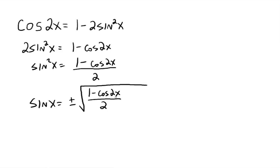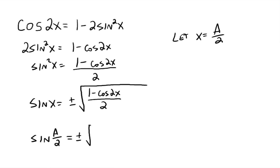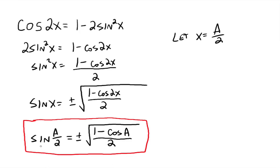Now we're going to replace x here. Let x equal some angle divided by 2 — we're going to plug in a over 2. When we do that, we have the sine of a over 2 equals plus or minus the square root of 1 minus the cosine of 2 times a over 2, which is just the cosine of a, all over 2. This is called a half-angle identity because we're taking the sine of half of a particular angle, a over 2, whatever a is — we're cutting that in half and taking the sine of that value.